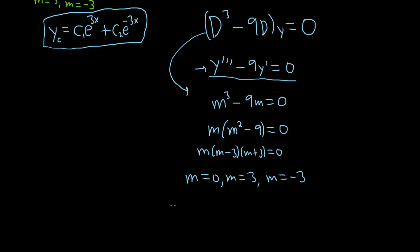So the solution here is y equals c1 e to the 0x plus c2 e to the 3x plus c3 e to the negative 3x. This is the same as saying c1 plus c2 e to the 3x plus c3 e to the negative 3x.